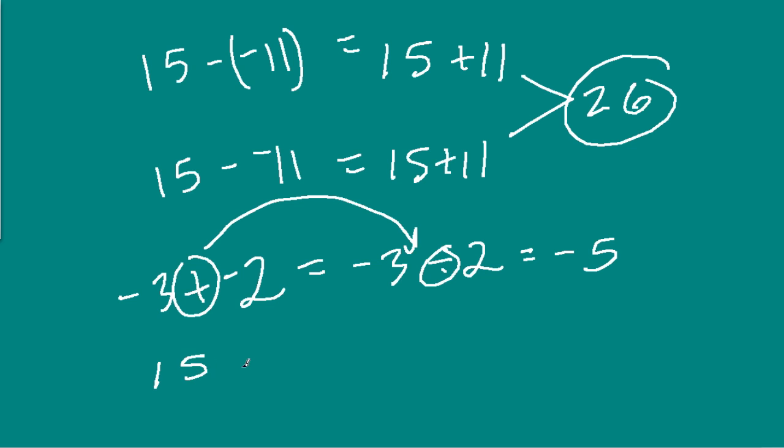If I had, for example, 15 minus 11, I could think of this as 15 plus negative 11. Same thing either way. 15 minus 11 is 4. 15 plus negative 11 is also 4. And all I'm doing is switching the operations, and then switching the second number to its opposite.